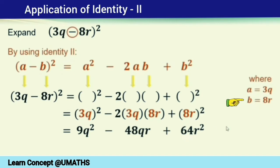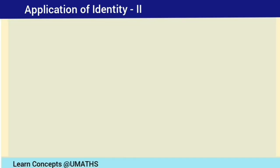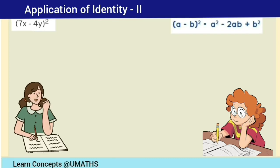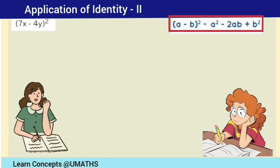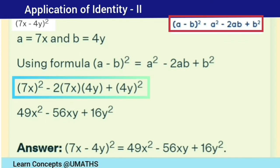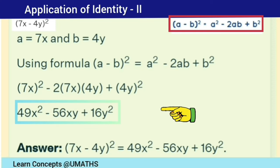Note an important point: we do not insert b as minus 8r, because comparing the given expression with the identity we find minus b equals minus 8r, which means b is 8r. Let us solve another example of identity 2. Are you ready, students? First confirm the expression is in the form a minus b whole square, then identify the values: a equals 7x and b equals 4y. Inserting these into the right-hand side and solving gives 49x squared minus 56xy plus 16y squared.